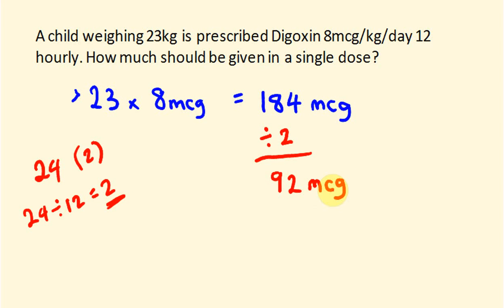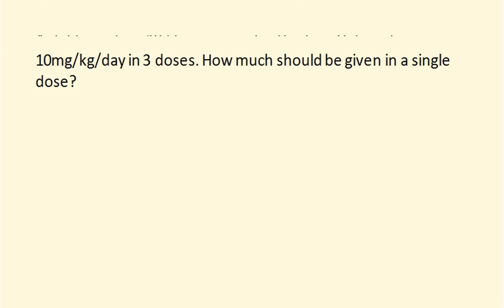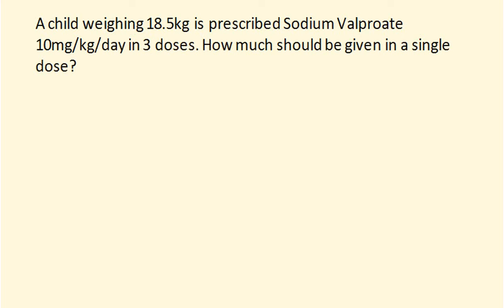Be very careful with this because there's a tendency of people to actually divide by 12 automatically, but that's not the case. Next example: a child weighing 18.5 kilograms is prescribed sodium valproate, 10 milligrams per kilogram per day in 3 doses.